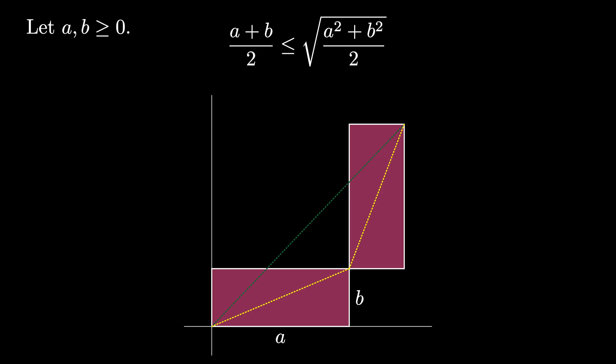The value on the left, a plus b over 2, is the arithmetic mean of the two numbers a and b, while the value on the right, square root of a squared plus b squared over 2, is the quadratic mean of the two numbers a and b. This latter value is sometimes called the root mean square as well.